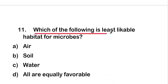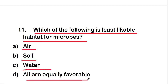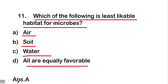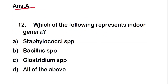Next question: which of the following is the least likable habitat for microbes? The options are air, soil, water, or all are equally favorable. The right answer is option A, that is air. Air is the least likable habitat for microbes.